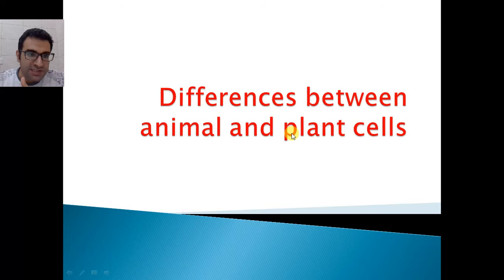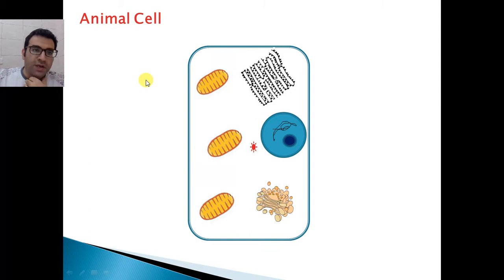First of all, this is the animal cell as you can see. The organelles or parts of the animal cell include the cell membrane, which is the first line of defense that surrounds the cell and controls everything in and out of the cell.